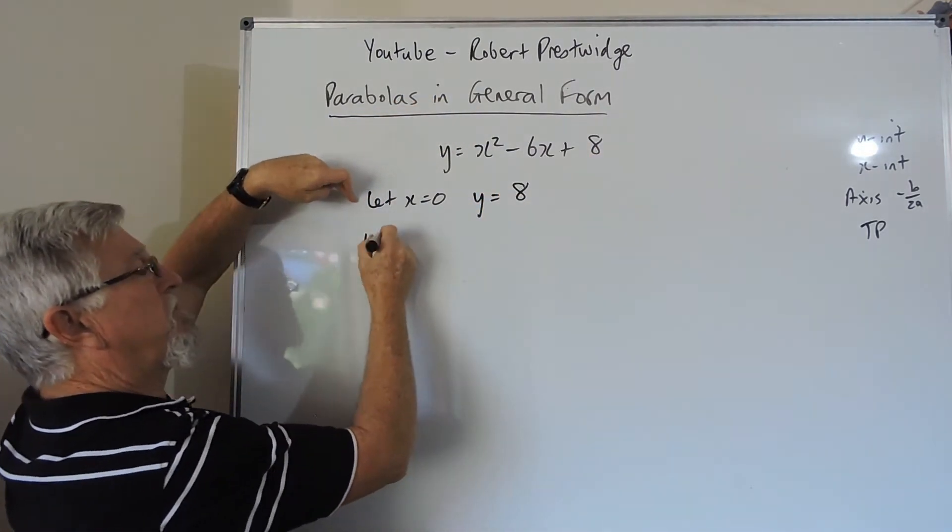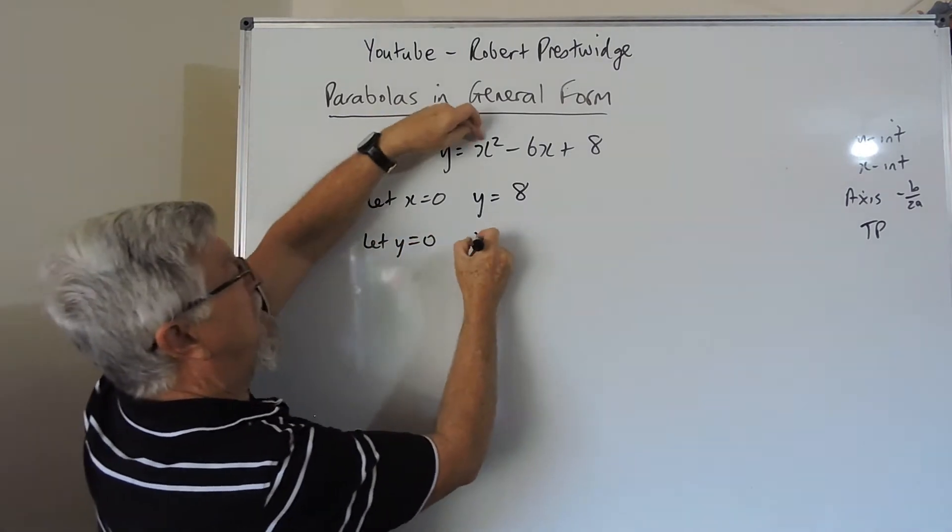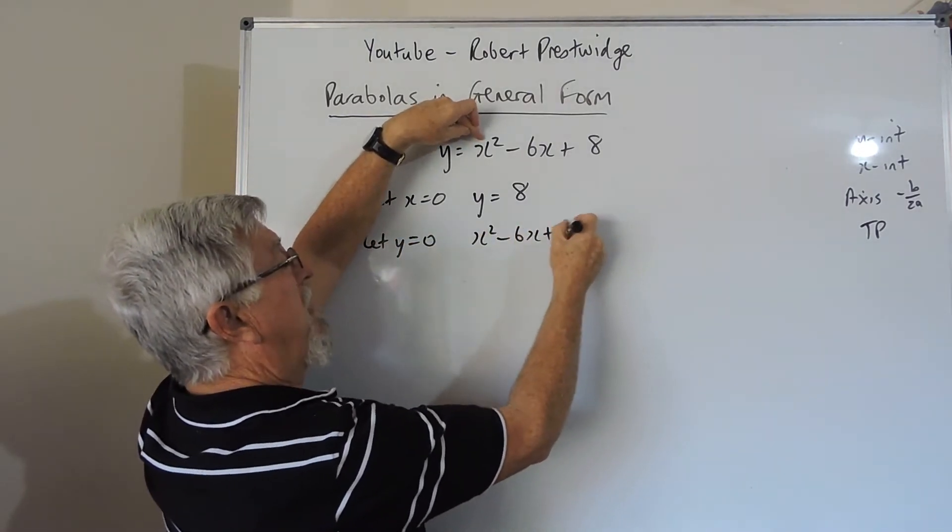If we want the x-intercepts, we let y equal 0. So you've got x squared minus 6x plus 8 equals 0.